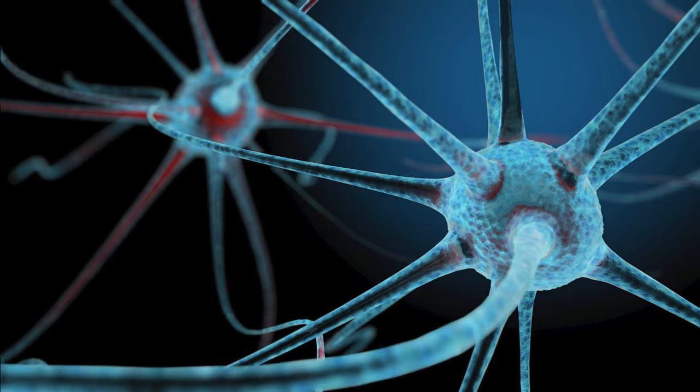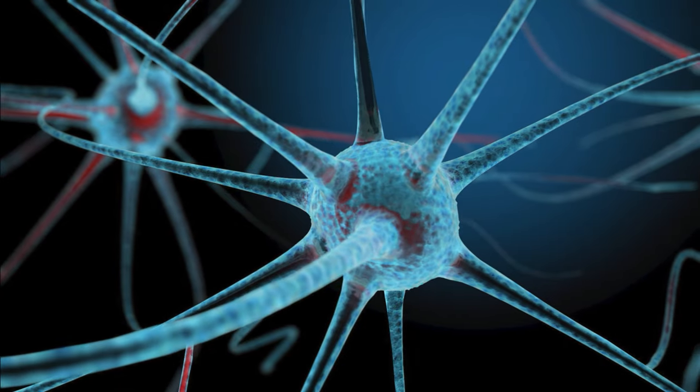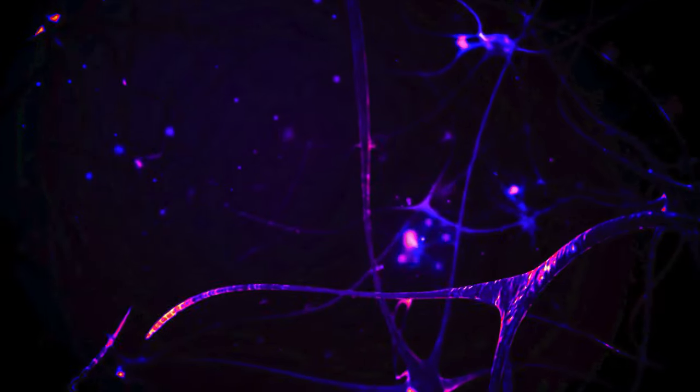Monists believe mind and matter are exactly the same kind of thing. This includes physicalism, among others, the idea that the mind could be explained and reduced in some way to the workings of matter in the body. Physicalism is perhaps the most common theory of mind now, but even within this branch there are arguments and various theories.